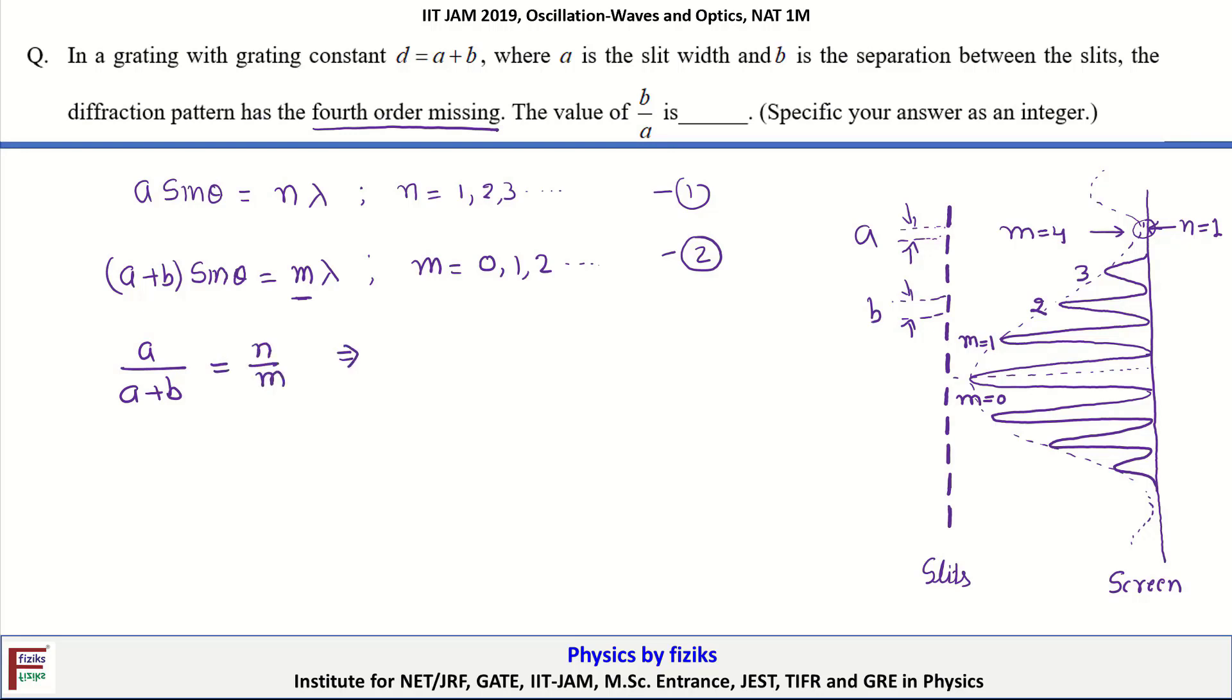From here, we can find the equation for the missing order. This m will be equal to (a plus b) upon a times n, which becomes (1 plus b by a) times n.